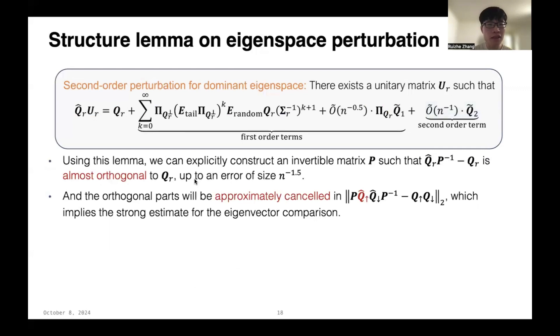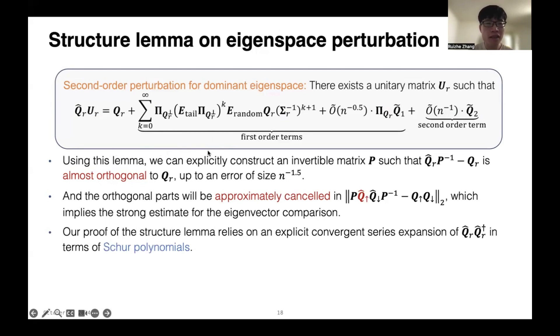Why do we need this lemma? Basically, using this lemma, we can explicitly construct an invertible matrix P, such that the column space of Q̂_r times P inverse minus Q_r is almost orthogonal to Q_r. So although the orthogonal parts might have a large norm, they will be approximately cancelled by this Q̂_up matrix in the front. This will imply a stronger estimate for the eigenvector comparison. I also want to mention that our proof used an interesting application of Schur polynomials, which were previously mainly used in the group representation literature. But here we apply it to solve a signal processing problem, and we believe it will have more applications in TCS.